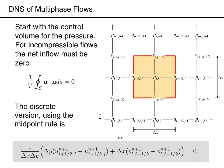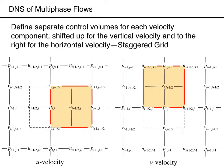Thus, the discrete incompressibility condition states that the difference between the u velocity at i plus 1 half comma j and i minus 1 half comma j times delta y, plus the difference between the v velocity at i comma j plus 1 half and i comma j minus 1 half times delta x, everything divided by the volume delta x times delta y, is equal to zero. The important thing so far is that when we apply the incompressibility condition to the pressure control volume, we need the velocities halfway between the pressure points. If the velocity was available at the pressure points, we could interpolate, but there is a better alternative where we find the velocities at the edges of the pressure control volume directly.